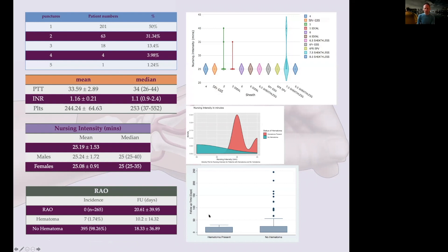You can see 25 minutes mean nursing intensity time, which means that these patients are seen by a nurse for only 25 minutes after the procedure, which again is a huge benefit, which means they can get out of hospital much faster. Very low hematoma rate—seven in the total study, 1.74%, were all minor, no major issues.